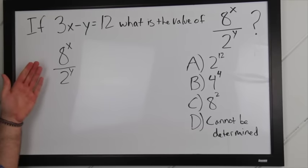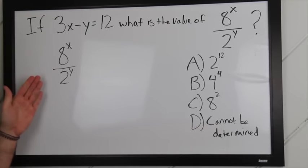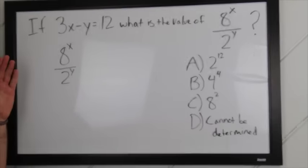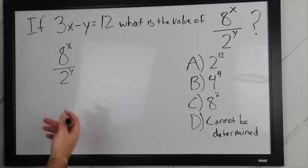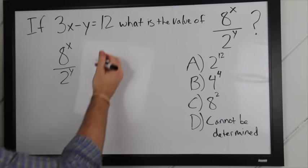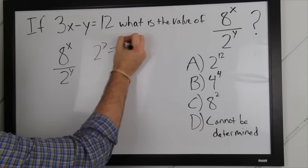So, if we rewrite what we're looking for over here, 8 to the x over 2 to the y, we hopefully will realize that in order to compare these two, we need to have the same base. So, we know that 2 to the 3rd power is equal to 8.